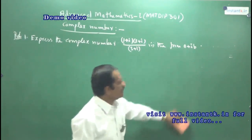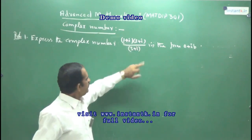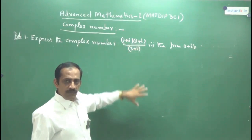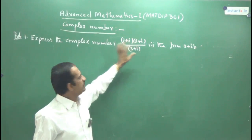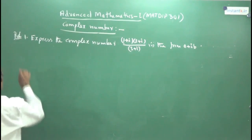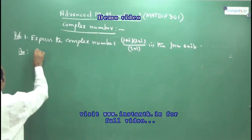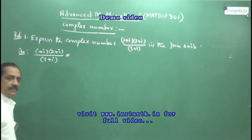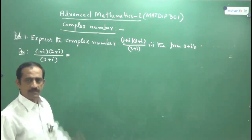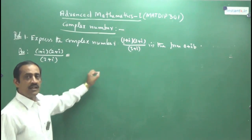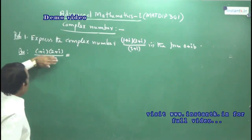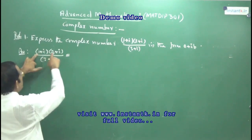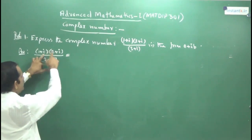When a problem of this type is given, you have to eliminate the denominator — the denominator must be a purely real number. For that, you take the conjugate of the denominator and multiply numerator and denominator by it. But first, better to write the numerator in terms of x+iy by expanding the product. Take (1+i)(2+i): multiply to get 1×2 + 1×i + i×2 + i×i.